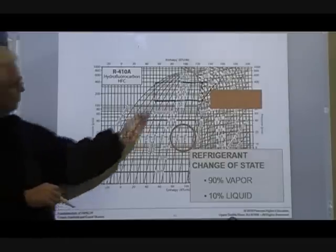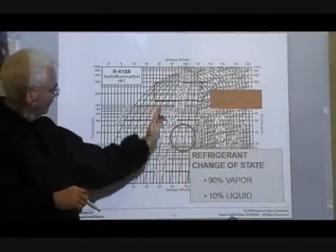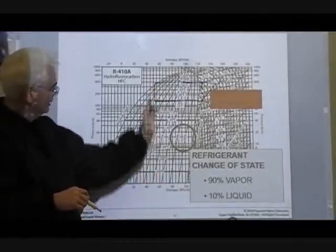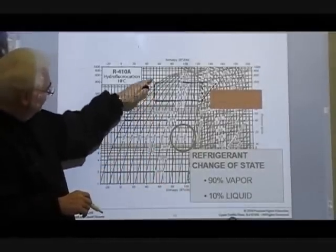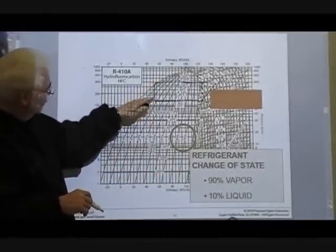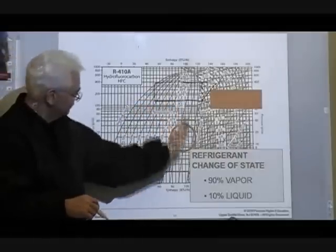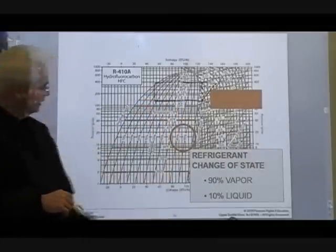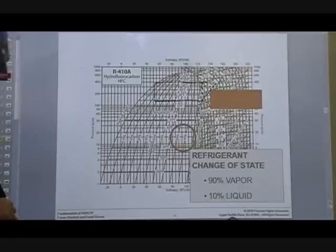That's where you don't have any net refrigeration effect. That's why you have a straight line as it goes down — it doesn't really change anything, there's no enthalpy change and no refrigeration effect.